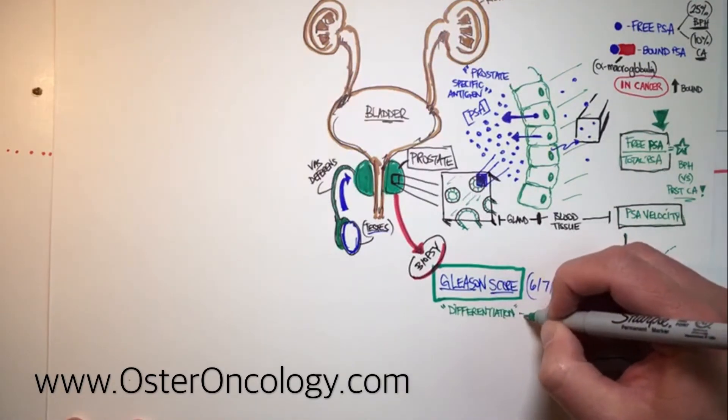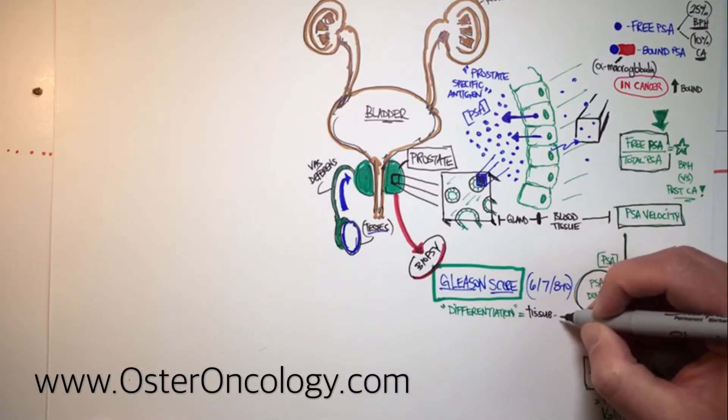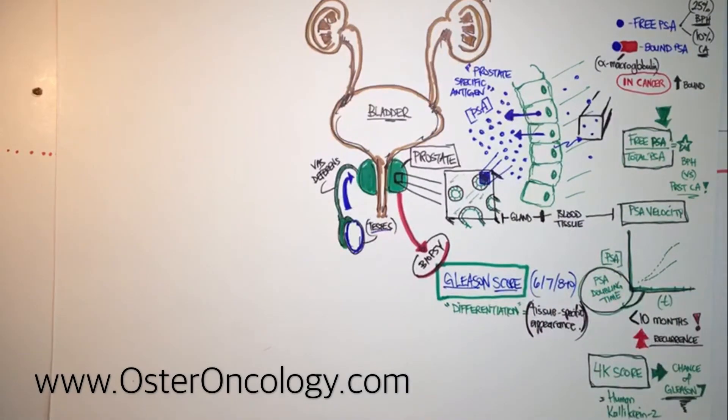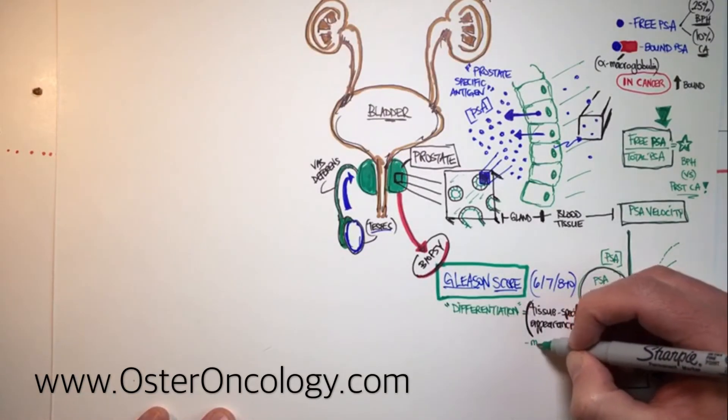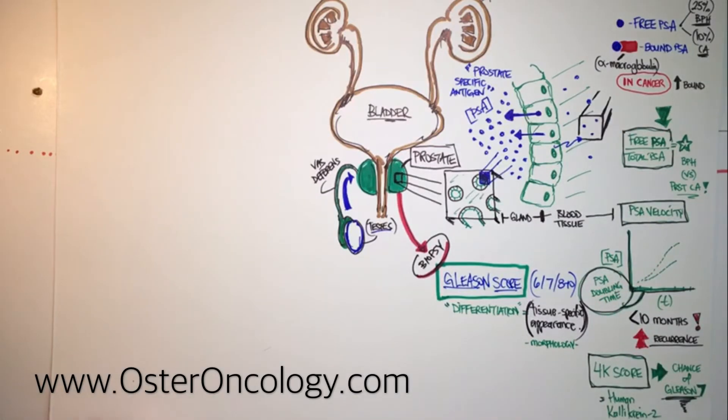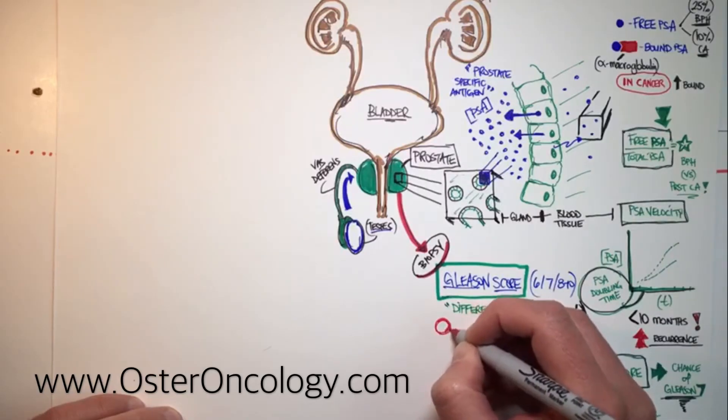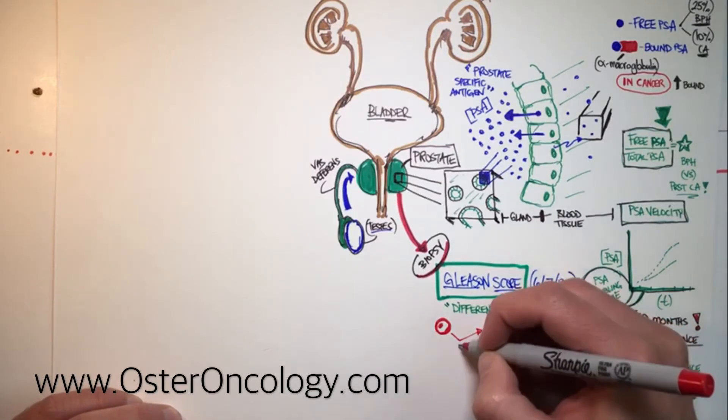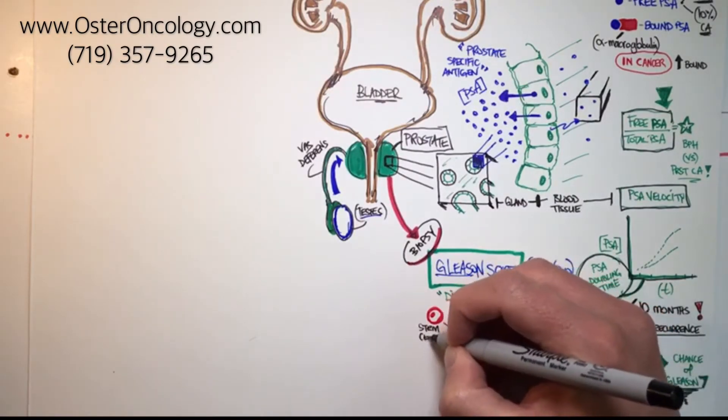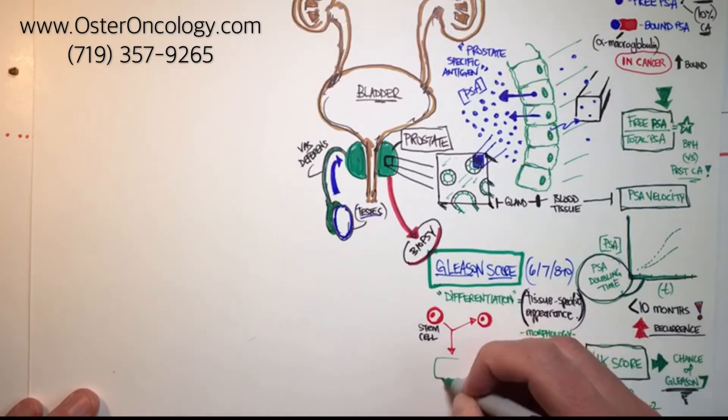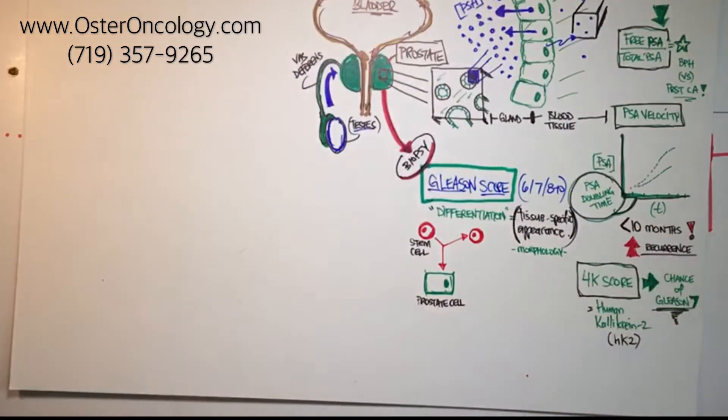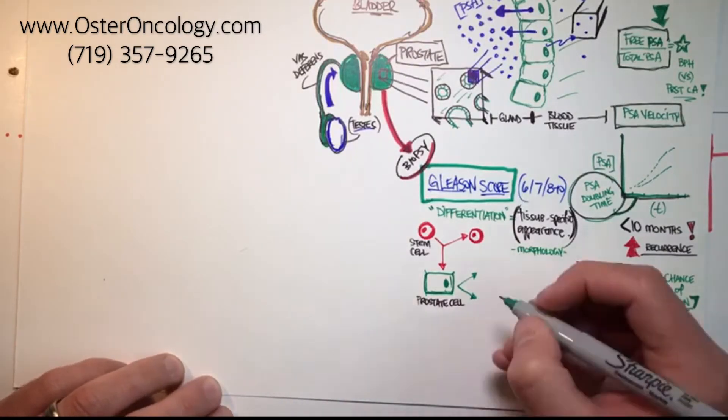So your Gleason score is a measurement of something we call differentiation, and differentiation can sometimes be best described as tissue specific appearance. So it's actually looking at the cells, it's a pathologist looking at the cells. We also call this morphology, what do the cells actually look like. And so when a cell, just give you an idea of what differentiation means, if we're looking at a stem cell, so I'll draw a little red stem cell here, and stem cells can divide. And when they typically do, one of the offspring, the daughters, will be another stem cell, so you see I drew one stem cell dividing into another stem cell, but also in a particular tissue it will divide and change into a cell that looks different because it starts to pick up the responsibility of a certain function depending on the tissue it finds itself in.